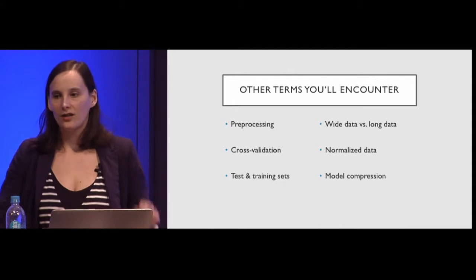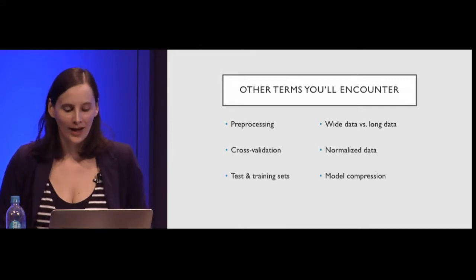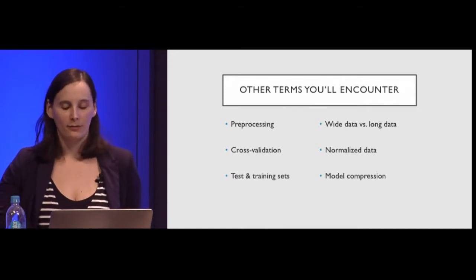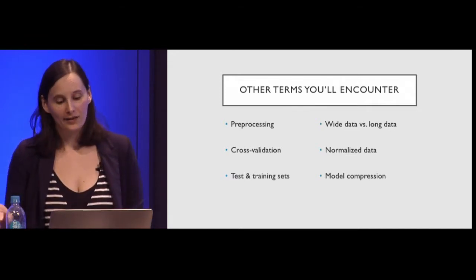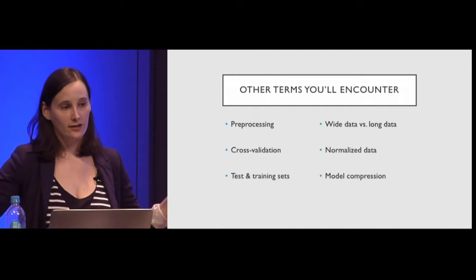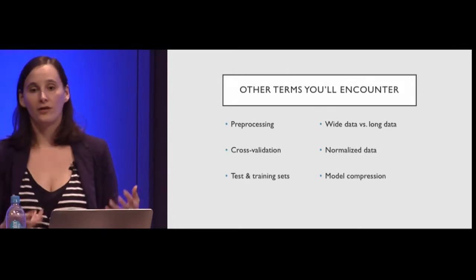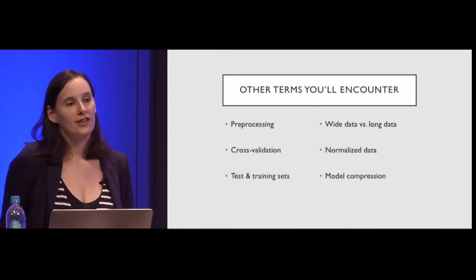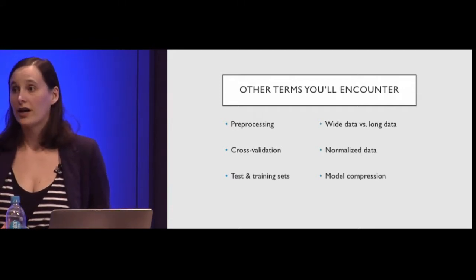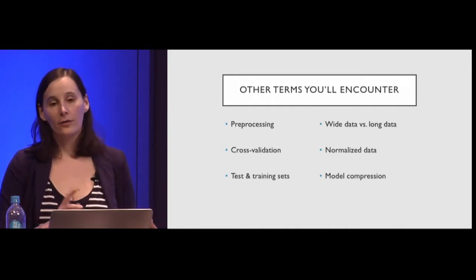Wide data is when you know a lot about not too many people — in a spreadsheet you'd have few rows but hundreds of columns. Long data is when you have many rows but don't know very much about each one. Normalized data is when you take data with all sorts of different distributions and conform them all to have the same distribution, so all attributes are weighted equally. Model compression is when you have a good model that's too complicated or too big — say for moving to iOS — and you look for smart ways to make it simpler without losing too much accuracy.